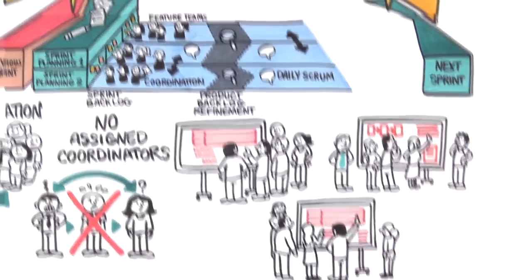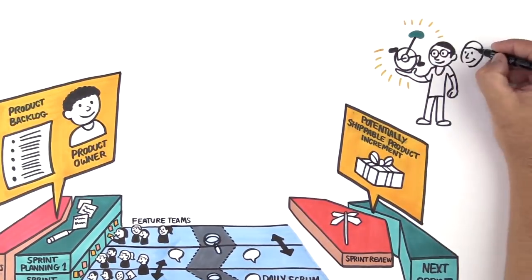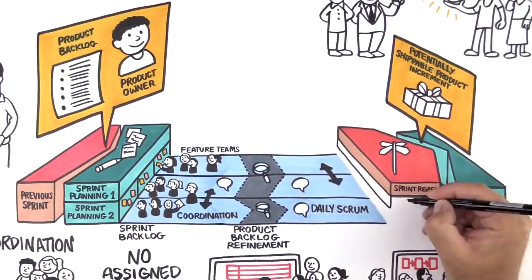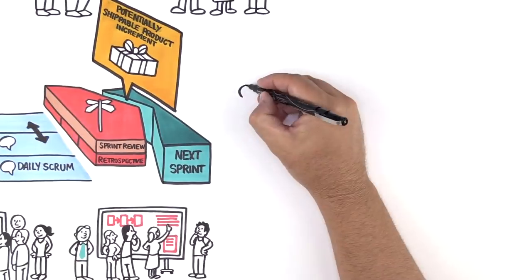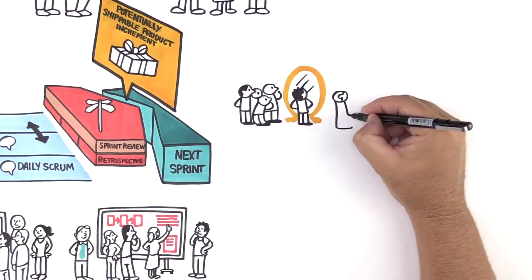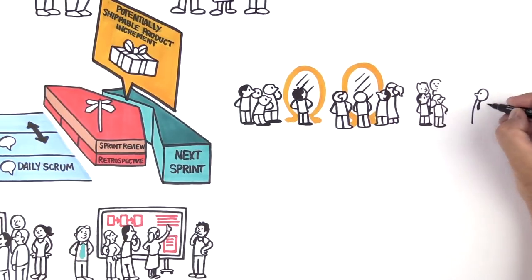We have one Sprint Review, a shared session where teams and customers explore what was done and determine the best next increment to develop. Each team retrospects to inspect and adapt its own way of working. We want teams to own their methods and processes, not rent them. Without ownership, there can be no continuous improvement.